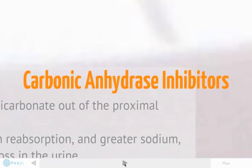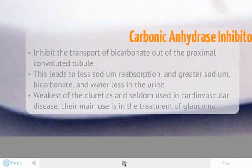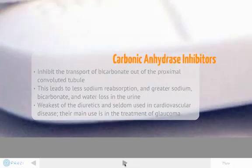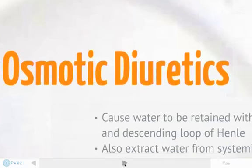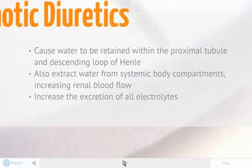We also have carbonic anhydrase inhibitors. These inhibit the transport of bicarbonate out of the proximal convoluted tubule. This leads to less sodium reabsorption and greater sodium bicarbonate and water loss in the urine. These are the weakest of the diuretics and seldom used in cardiovascular disease, though their main use is in the treatment of glaucoma. Finally, osmotic diuretics cause water to be retained within the proximal tubule and the descending loop of Henle. They also extract water from systemic body compartments, increase renal blood flow, and increase the excretion of all electrolytes.